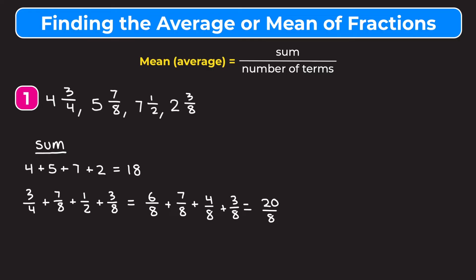And now I'm going to change this into a mixed number so that it's easier to add to our whole number part. So eight goes into 22 times and two times eight is 16. So we have four left over. So we have two and four eighths, which simplifies to two and one half.